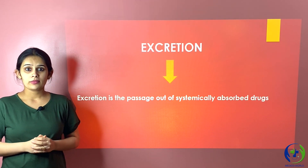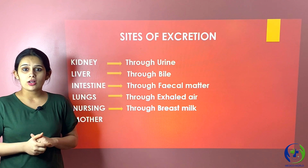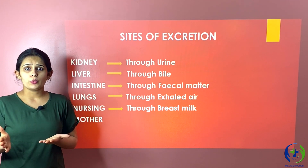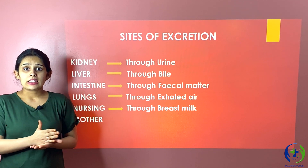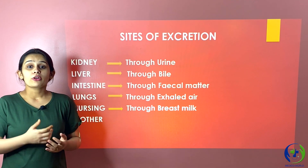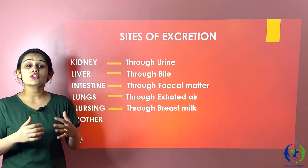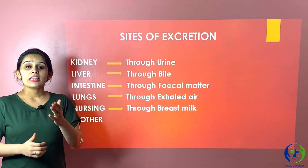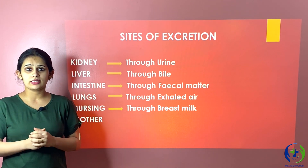There are various sites through which excretion occurs in our body: from the kidney through urine, from the liver through bile, from the intestine through fecal matter, from the lungs through exhaled air, and from nursing mothers through breast milk. However, most drugs are excreted from the kidney in the form of urine, so we will be studying about renal excretion.